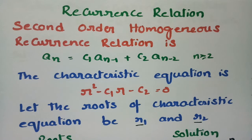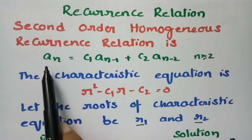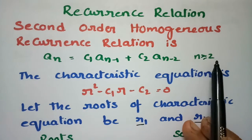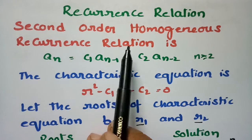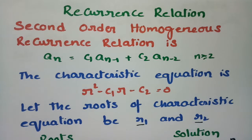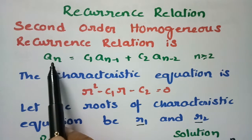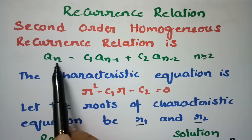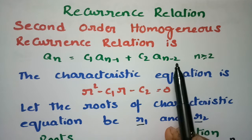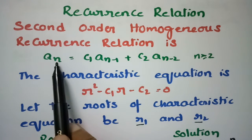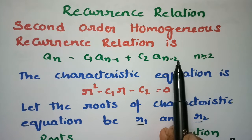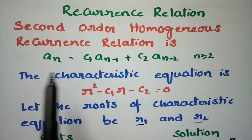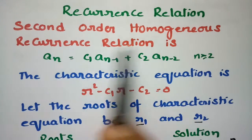Today's video is on second order homogeneous recurrence relations. Any equation of the form An = C1·A(n-1) + C2·A(n-2), where n ≥ 2, is called a second order homogeneous recurrence relation. To find the degree or order, we make a difference between the greatest subscript and the lowest subscript. Here the greatest subscript is n and the lowest is n-2, so n - (n-2) = 2, giving us degree 2.